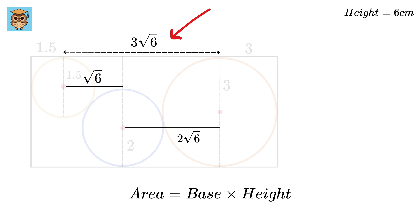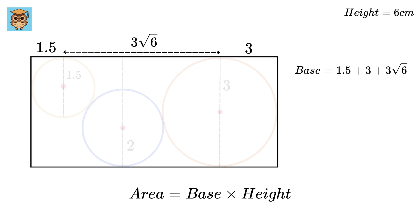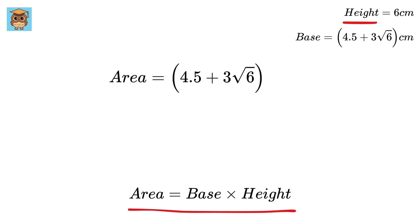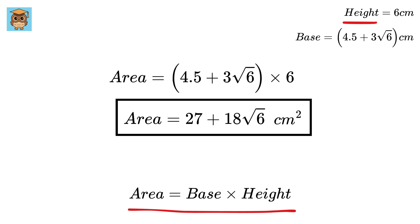So this length will be 3√6. The total base will be 1.5 plus 3 plus 3√6, which equals 4.5 plus 3√6. Now that we have the base and height, we can calculate the area. Area = 6 × (4.5 + 3√6) = 27 + 18√6. Don't forget to put the centimeters squared.